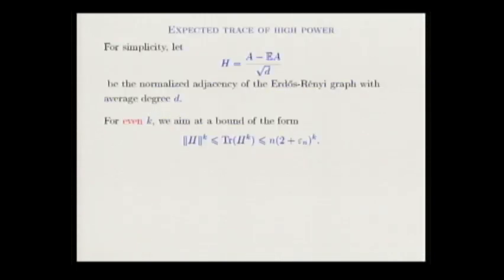To explain our improvement, I need to describe the Furedi–Komlós method, which is very nice and robust. In the simplest case — the adjacency matrix of an Erdős–Rényi graph with all Bernoulli entries at parameter d/n — you cannot control the operator norm directly. So you compare it with the trace of a large even power of your matrix: the norm of H^k is bounded by the trace of H^k, which counts eigenvalues. The issue is you are typically off by a factor n.